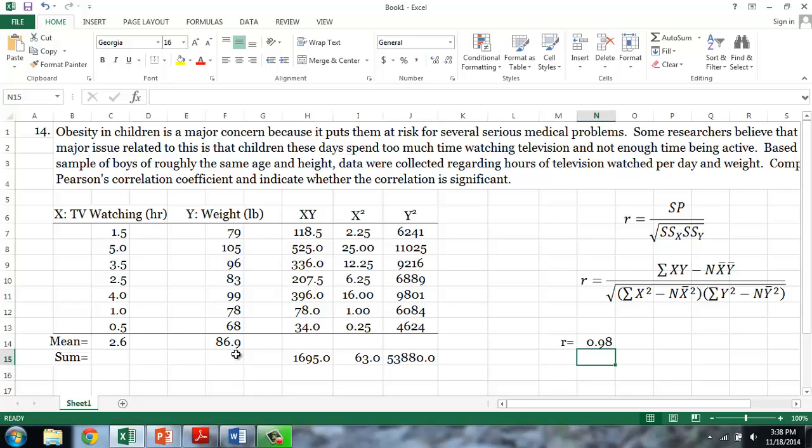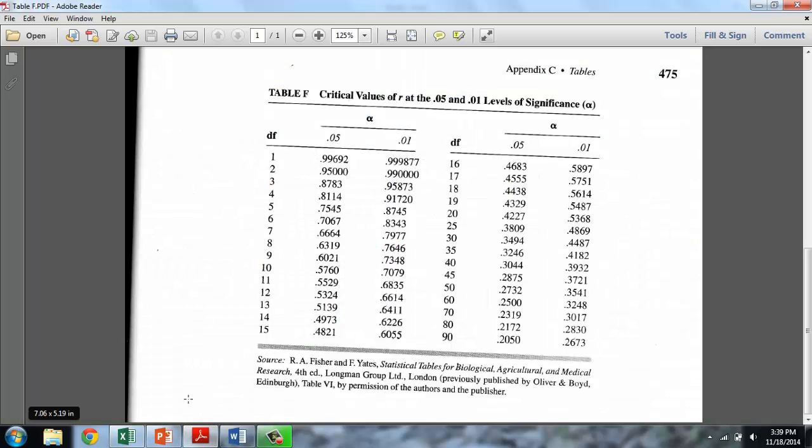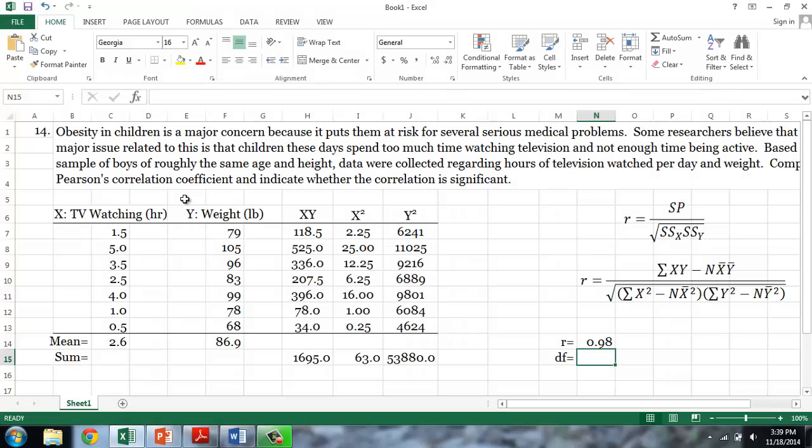The final step is to determine whether or not this R value is significant. Your textbook provides a formula for determining this using the t-statistic. However, your book also provides, in table F on page 475, critical values of R at the 0.05 and 0.01 levels of significance. And this is much easier than calculating a t-statistic. The only additional piece of information we need is the degrees of freedom. For correlation, the degrees of freedom is equal to n minus two,